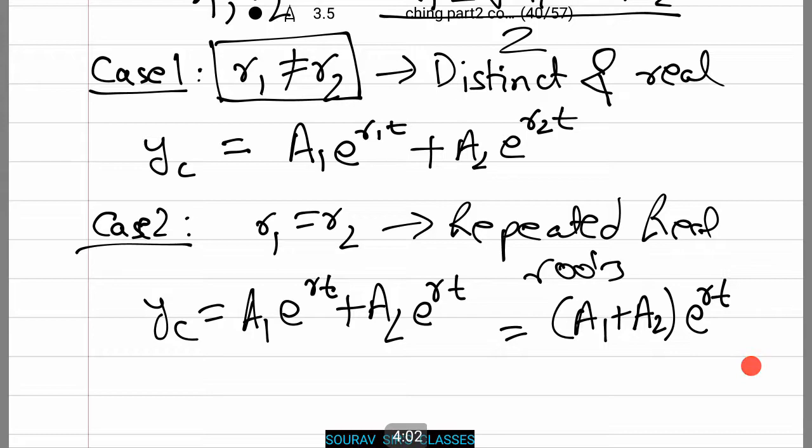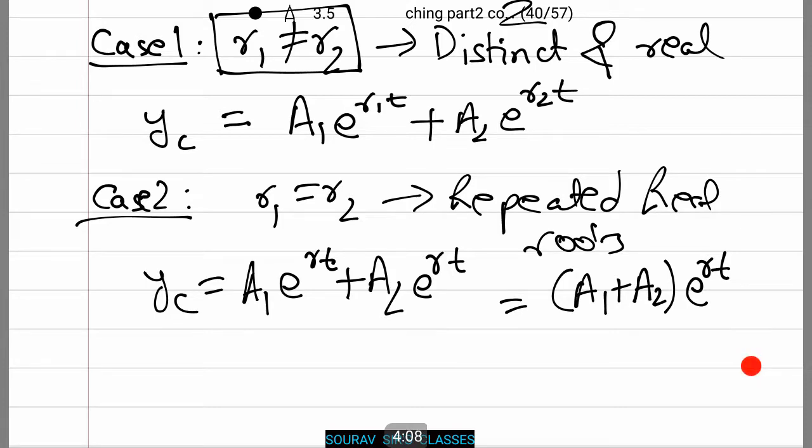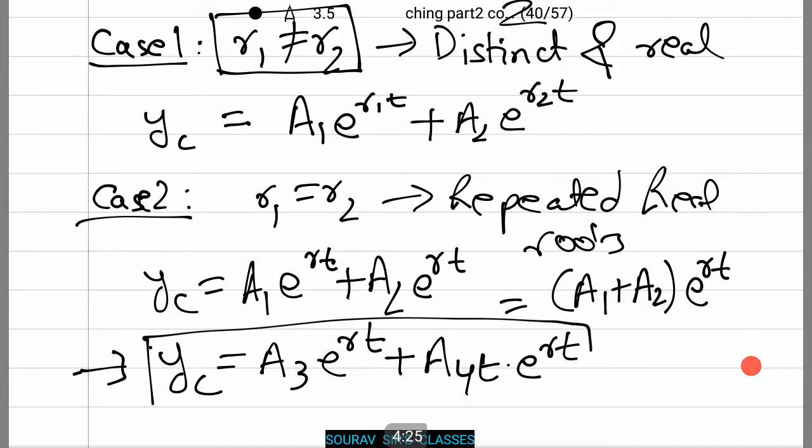Now there is a further complicated process. Since I have stopped here, we will do a modified version. You just need to understand and remember that yc equals A₃e to the power rt plus A₄t times e to the power rt. Always use this formula. You don't need this formula; just for how the process is done I have shown you. This formula we will always use, the one that I have put in a box. This is the most important case and people make mistakes. Notice there is a term t multiplied with A₄.